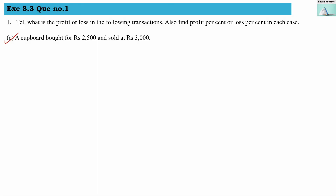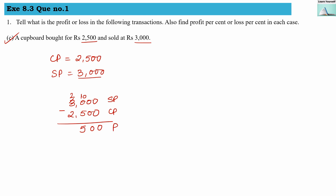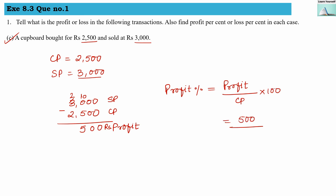Part (c): a cupboard bought for rupees 2,500 and sold for rupees 3,000. The cost price is 2,500 and selling price is 3,000. Since selling price is more, this is a profit. Subtracting gives 500 rupees as profit. The profit percentage formula is: profit divided by cost price, multiplied by 100.